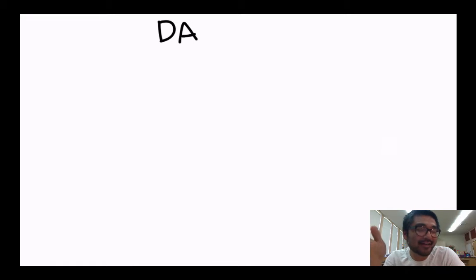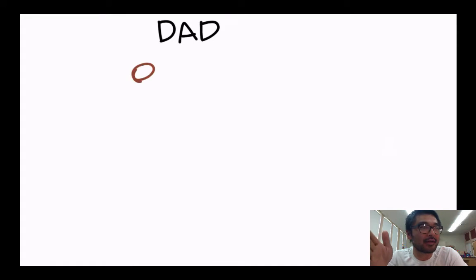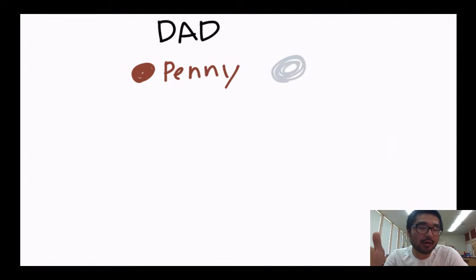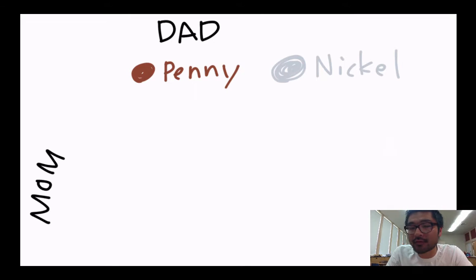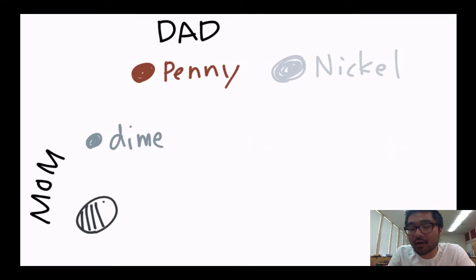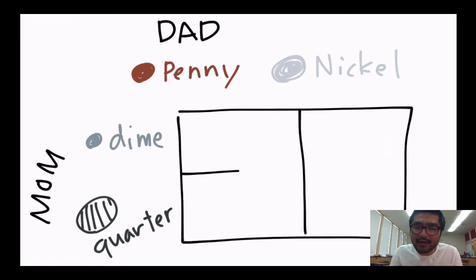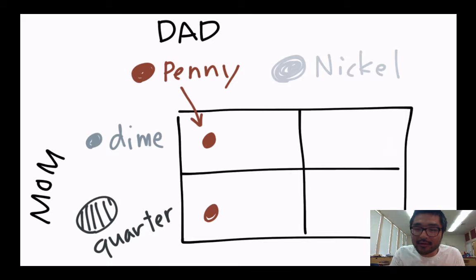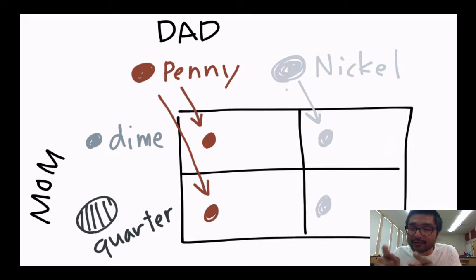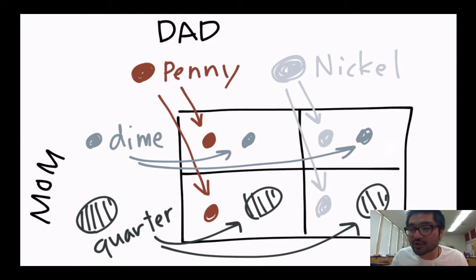Your dad can give you either a penny or a nickel, and your mom can give you either a dime or a quarter. So if you make a table like this, you can find out the possible combination of the coins.